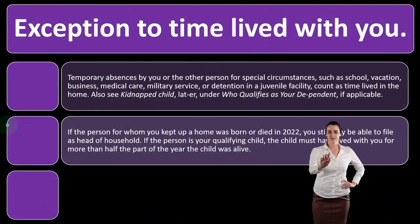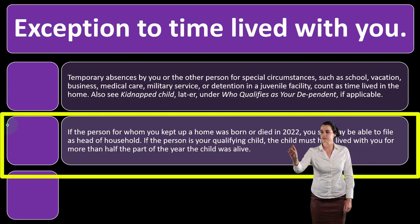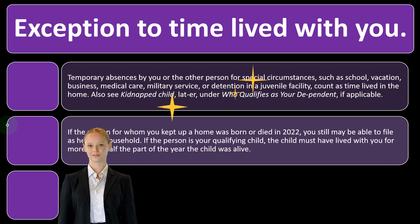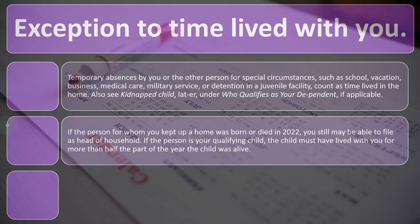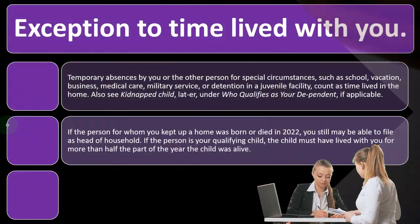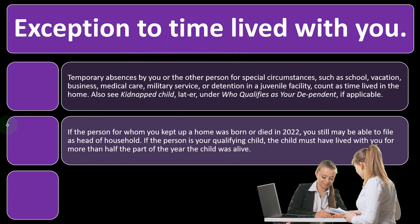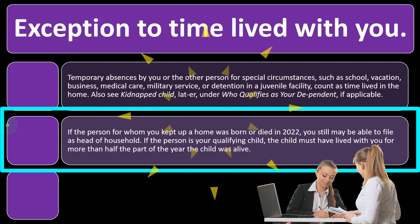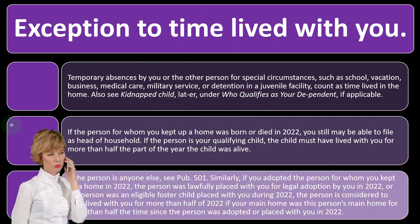If the person for whom you kept up a home was born or died in 2022, you may still be able to file as head of household. If the person is your qualifying child, the child must have lived with you for more than half the part of the year the child was alive — not the entire year, since death would skew that calculation. So the relevant period is only while the child was alive within that year.